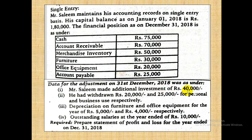Mr. Salim made additional investment of Rs. 40,000. Previous videos mein hum ne dekha — additional investment ki amount profit and loss mein use hoti hai. He had withdrawn 20,000 and 25,000 for personal and business use respectively. Jo pehle amount likhi hai woh personal use ke liye hai aur jo baad mein amount likhi hai woh business use ke liye. Personal use wali amount drawing kehlaati hai, aur incomplete records ke topic mein drawing ko use karna parta hai.